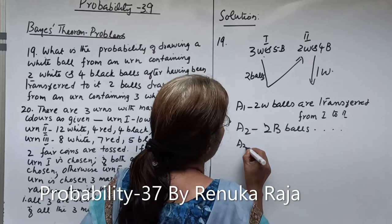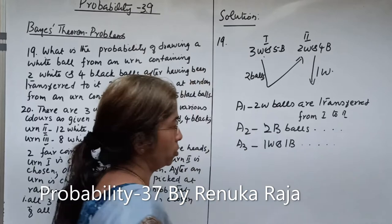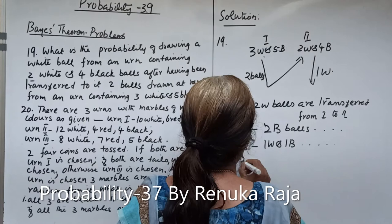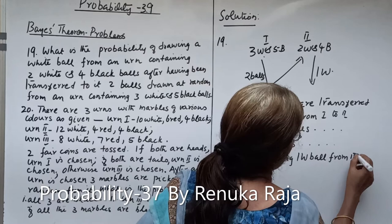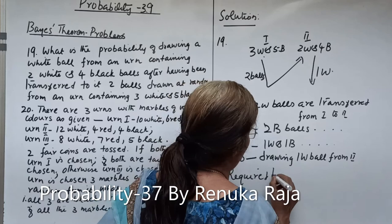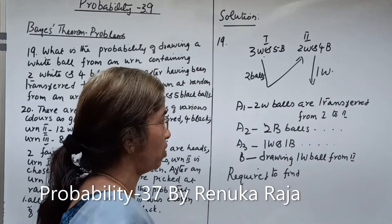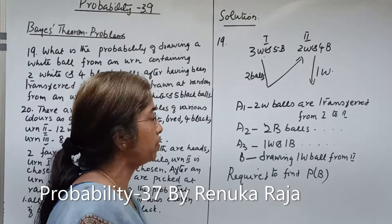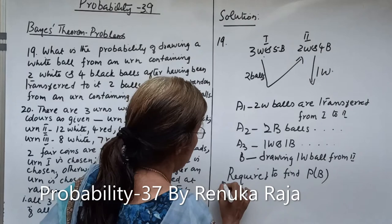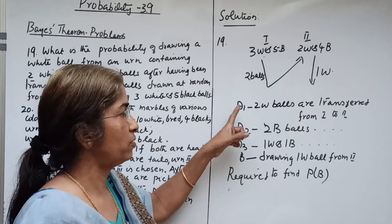A2 means 2 black balls are transferred from urn 1 to urn 2, and A3 means 1 white and 1 black ball are transferred from urn 1 to urn 2. These are the 3 possible alternative cases. Let B be the event of drawing 1 white ball from urn 2. We require to find P(B). By the total probability rule, P(B) equals sigma i=1 to 3, P(Ei) into P(B given Ei).